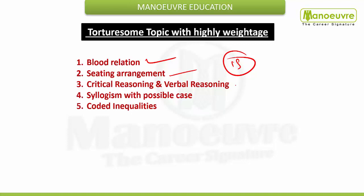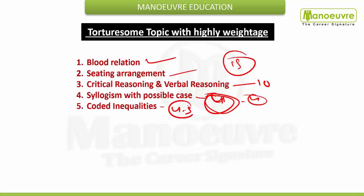Critical reasoning and verbal reasoning also contain nearby 10 marks. Then syllogism with possible cases — if even one set comes from syllogism, it will be for 4 marks, and within 2 minutes it will give you good marks. Coded and inequality — if questions come from here, you can expect at least 4 to 5 marks. Quite easily within 2 minutes, both these topics can give you very good marks, so you should properly focus on them.